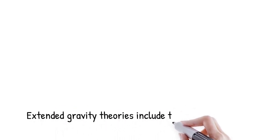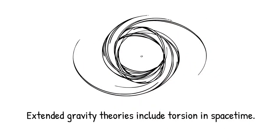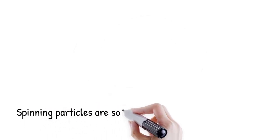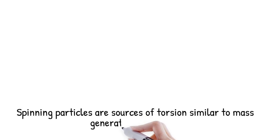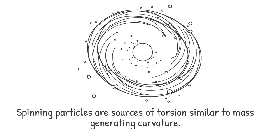The extended theories of gravity propose that space-time may exhibit not only curvature but also torsion, a geometric twisting linked to matter's intrinsic spin. In these frameworks, spinning particles serve as sources of torsion, in much the same way mass energy generates curvature.